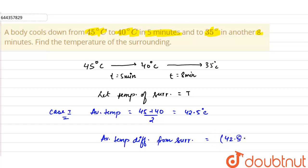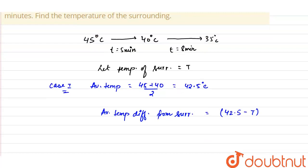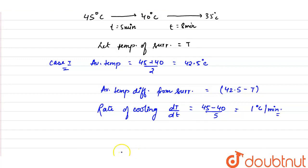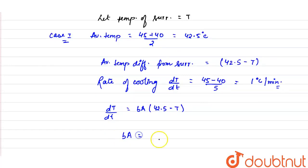The average temperature difference from the surrounding is 42.5 minus T. The rate of cooling, dT/dt, is (45 − 40) / 5 = 1 degree Celsius per minute. From Newton's Law of Cooling, dT/dt = bA × (42.5 − T), so bA = 1 / (42.5 − T). Call this equation 1.